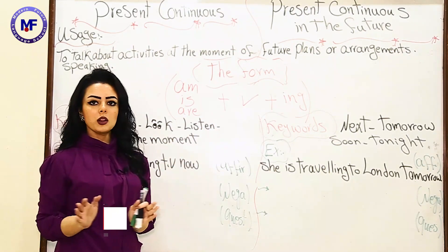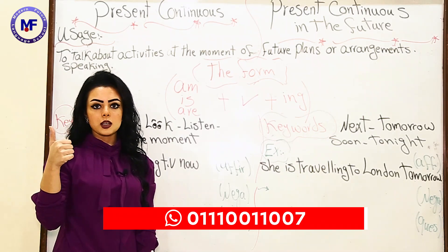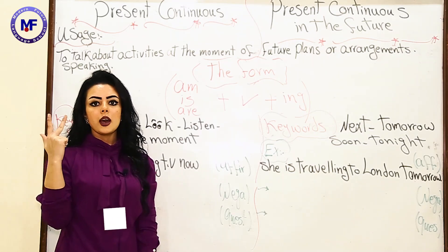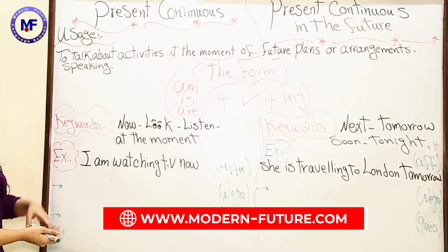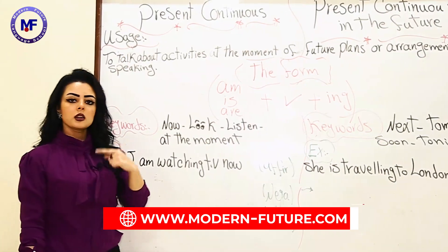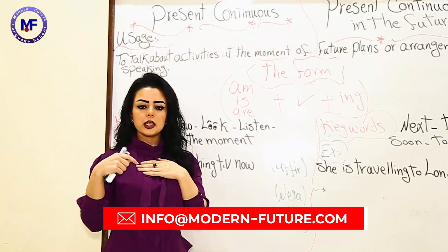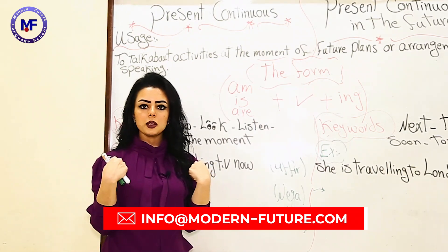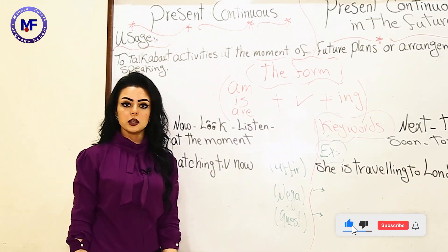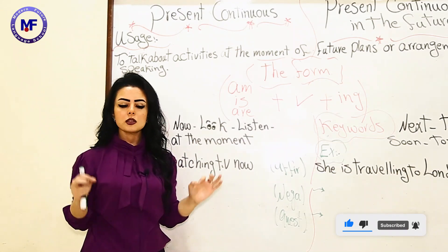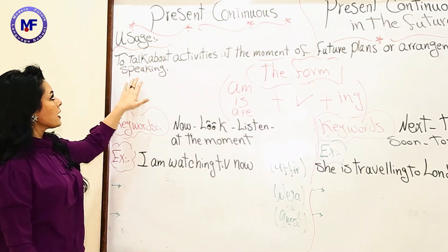First of all, if you're going to study any tense, you have to know three things: when you can use it, the form of the tense, and your keywords. We will take them together. Present continuous — we use it to talk about activities at the moment of speaking. So, I'm speaking now, and you are watching and listening to me. We use the present continuous to talk about actions or activities happening now.